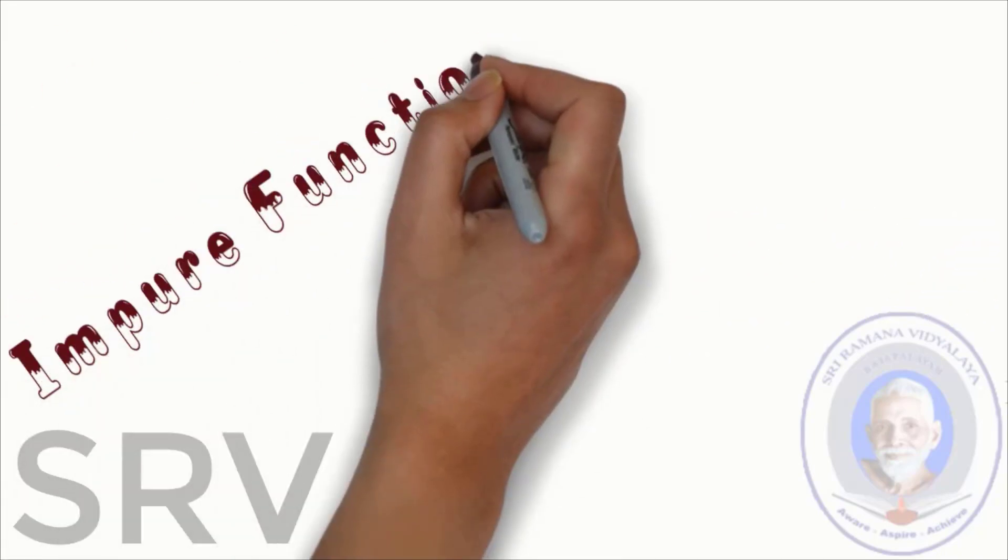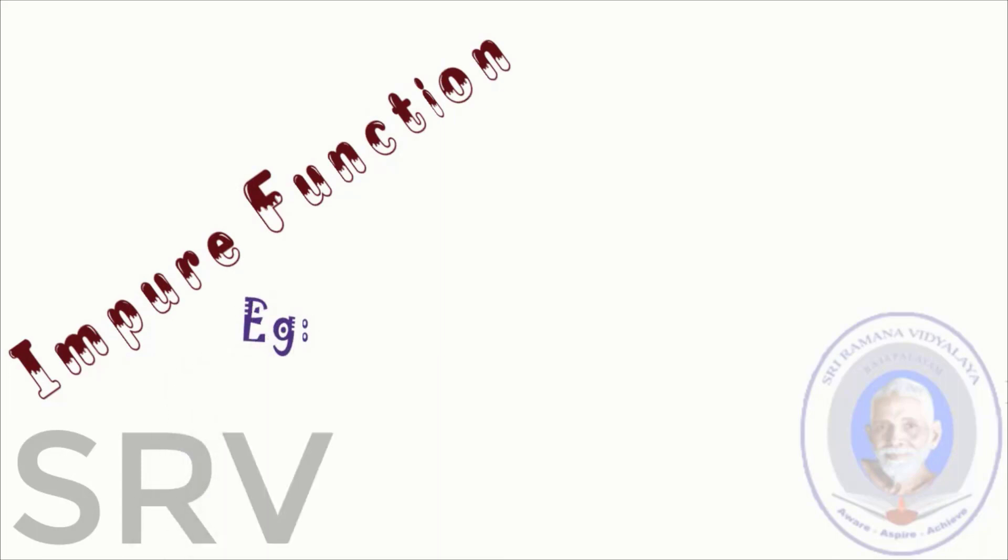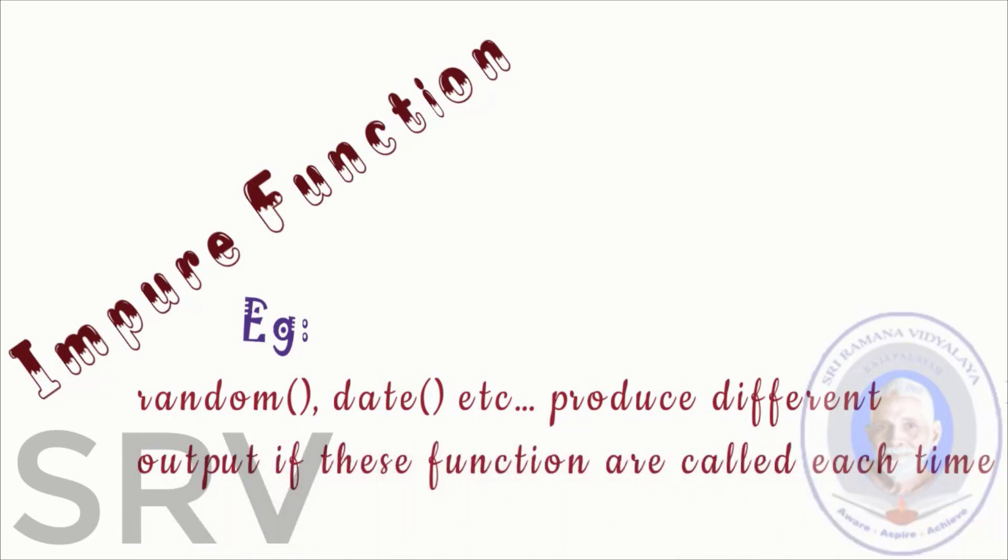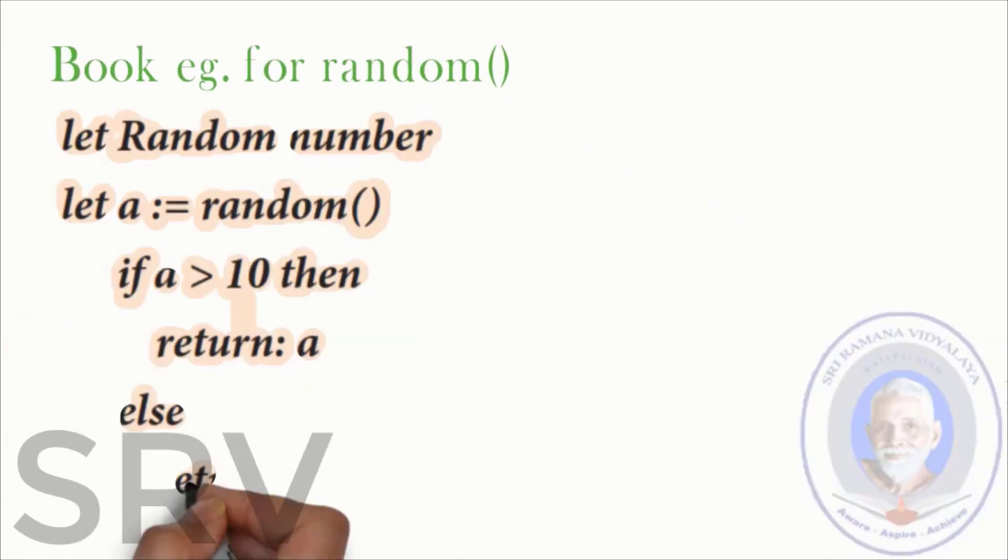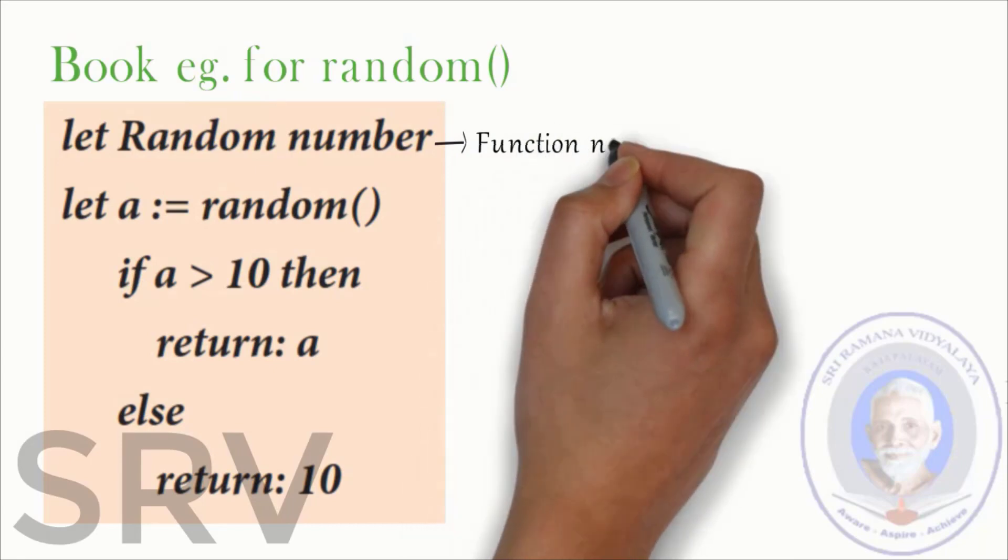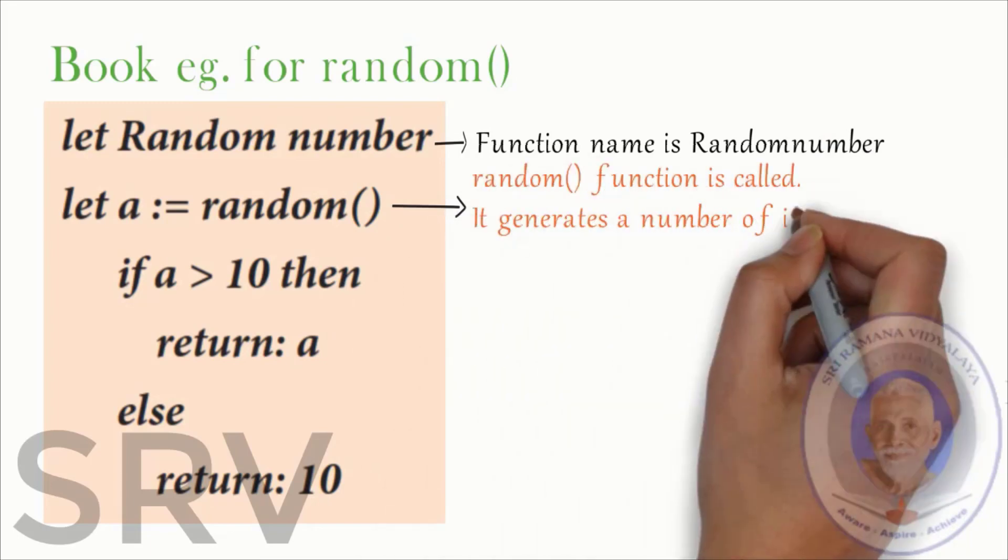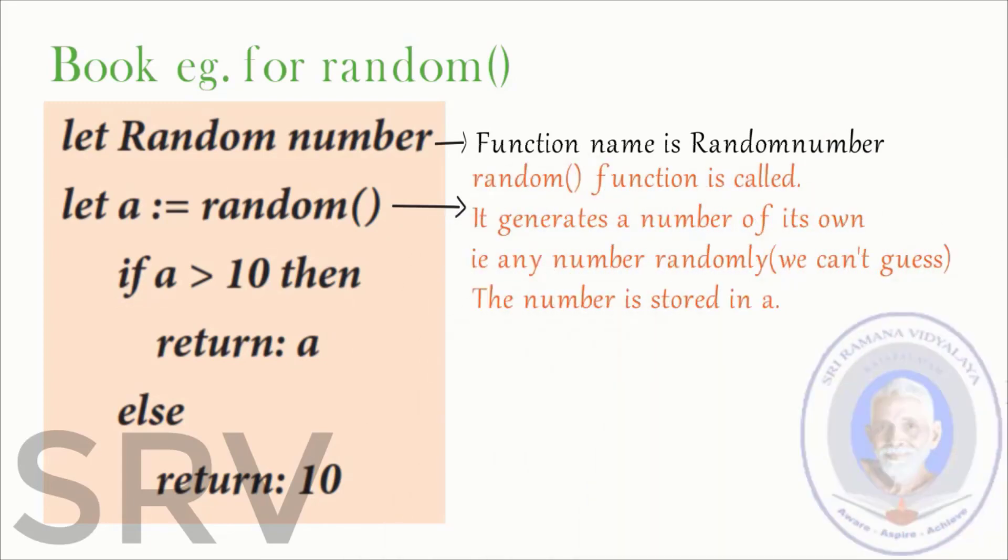Let's see an example for impure functions. The examples are random and date etc. They produce different output if these functions are called each time. Let's see an example for random. The function definition goes so. Here the function name is random number. Just remove the space between random and number. It's a book error. Next, the random function is called. It generates a number of its own. That is any number randomly. We can't guess what number it gives. It can be 1000, 1024 whatever number it is.